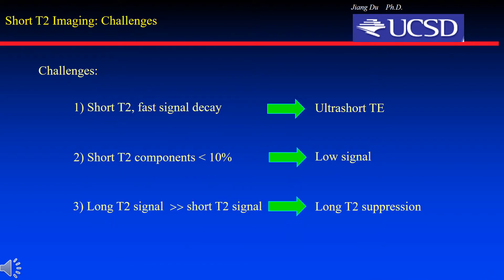It is challenging to image short T2 signals. First, short T2 signal decays very fast, so an ultra-short echo time sequence is required. Second, short T2 components typically account for less than 10% of total signals, so SNR is very limited. Third, long T2 signals are typically much stronger and last longer than short T2 signals, so long T2 suppression is essential for high-contrast short T2 imaging.